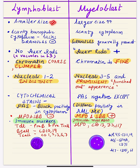The lymphoblast is slightly smaller in size than the myeloblast. The myeloblast has a larger size up to 20 microns, while the lymphoblast is smaller at 15 to 18 microns. The lymphoblast has scanty basophilic cytoplasm — the cytoplasm is very scant and it is very difficult to identify.